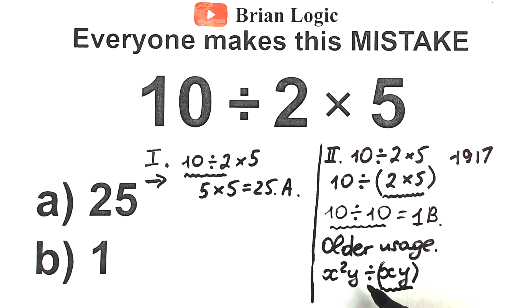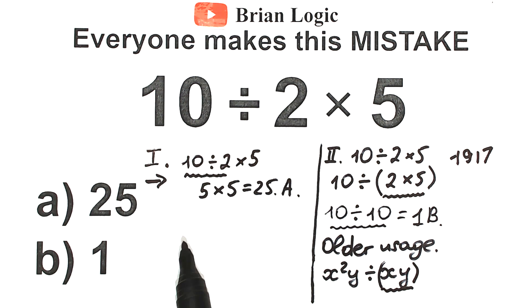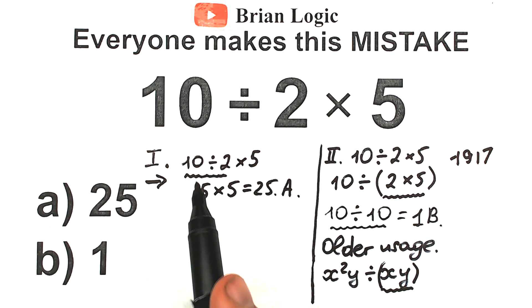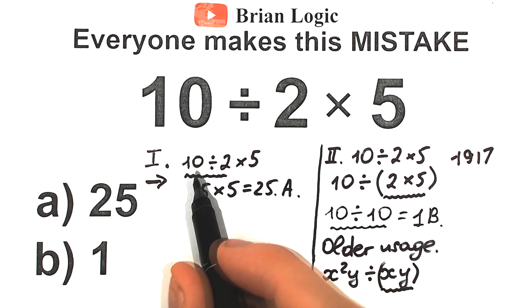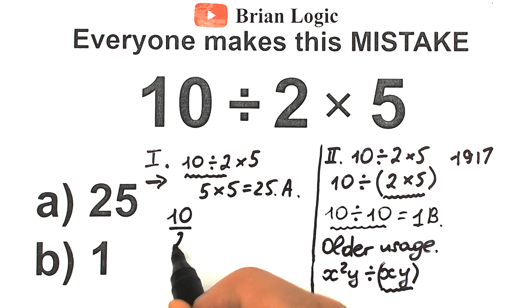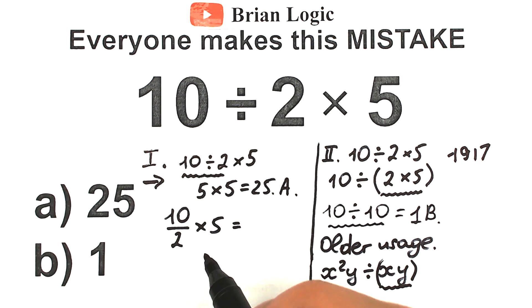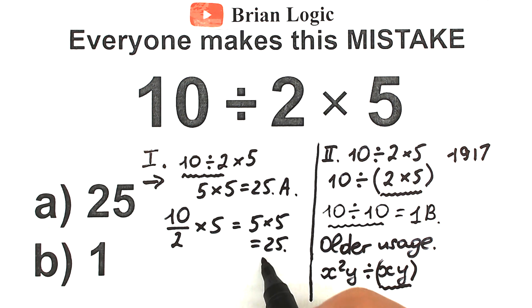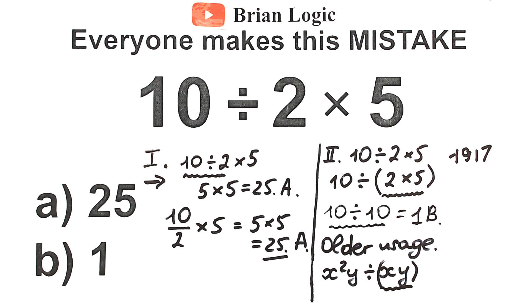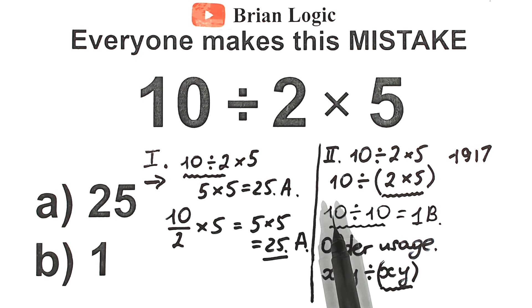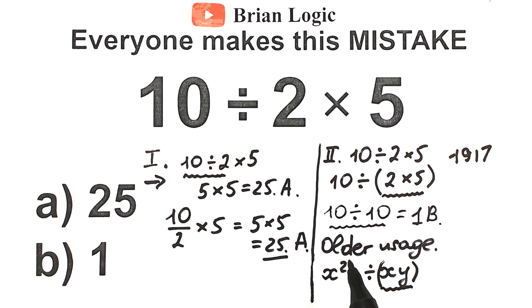This second interpretation is our older usage — it's not the correct answer that calculators will evaluate today. A lot of students also discuss writing this as a fraction: 10 over 2, times 5. That gives 10 divided by 2 equals 5, and 5 times 5 equals 25. If you don't trust me, you can easily check it in a scientific or graphing calculator — even a regular calculator will give the same answer, because calculators know order of operations. Every time you plug this expression into an internet calculator, you'll get Option A: 25. The older usage gives 1, but forget about it for modern math. The correct answer is 25.